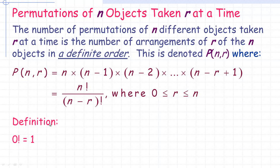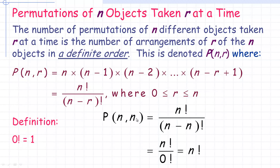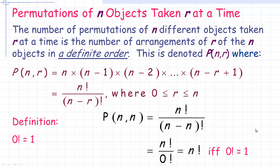We also make the definition that zero factorial equals one. This can be proven using the formula: n permute n should equal n factorial. Using the formula, that's n factorial over (n minus n) factorial, which is n factorial over 0 factorial. The only way this equals n factorial is if we define zero factorial equal to one. So that's a definition, and with it, n permute n always equals n factorial. That's the end of the tutorial.